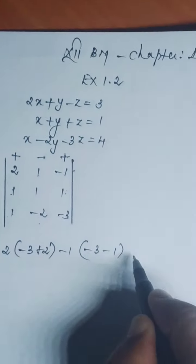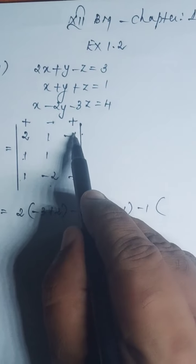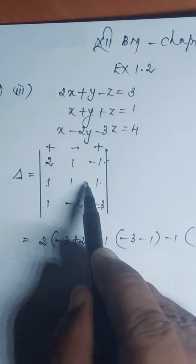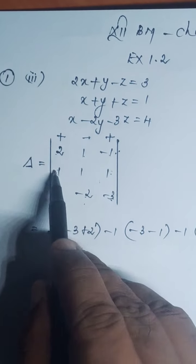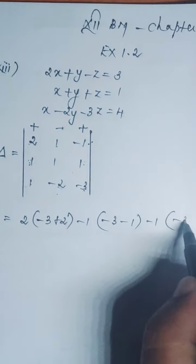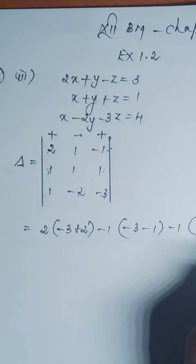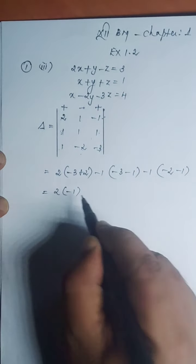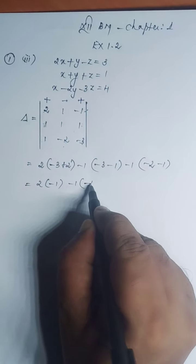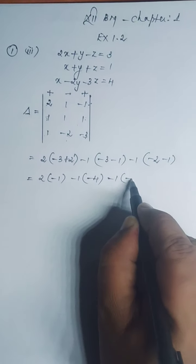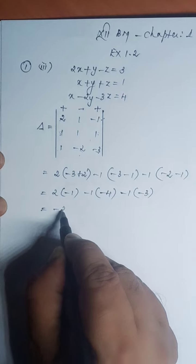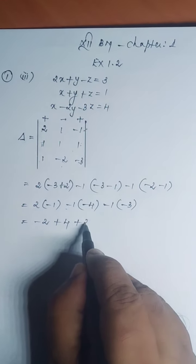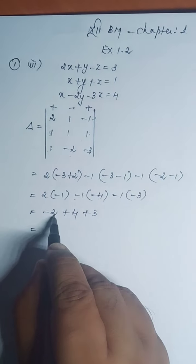Finally, plus into minus 1 is minus 1 into — the element's column and row should be eliminated. These four elements are left out. Multiply the leading diagonal elements: 1 into minus 2, minus 2, and 1 into 1, 1 becomes minus 1. That is equal to 2 into (minus 3 plus 2) is minus 1. Minus 1 into (minus 3 minus 1) is minus 4. Minus 1 into (minus 2 minus 1) is minus 3. That is equal to 2 into minus 1, minus 2; minus 1 into minus 4, plus 4; minus 1 into minus 3, plus 3. That is equal to 4 plus 3, which is 7, minus 2, equals 5.